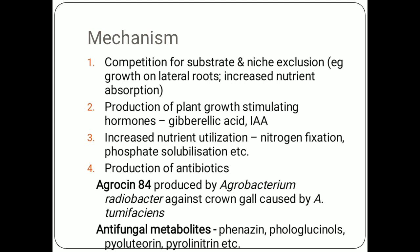The fourth mechanism by which PGPRs work is production of antibiotics. Some PGPRs produce compounds that inhibit other organisms. For example, Agrobacterium radiobacter produces Agrocin 84, a compound that inhibits Agrobacterium tumefaciens, which causes crown gall disease. Some rhizobacteria also produce antifungal metabolites like Phenazine, Phloroglucinols, or Pyrrolnitrin, which help protect the plant from particular fungi.